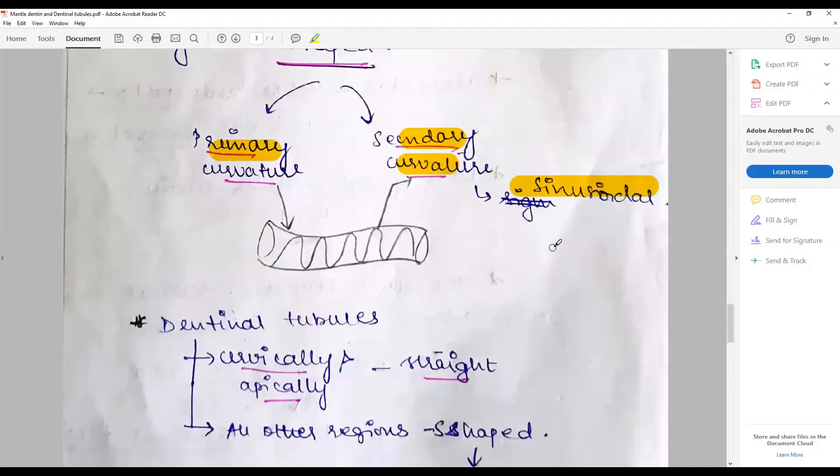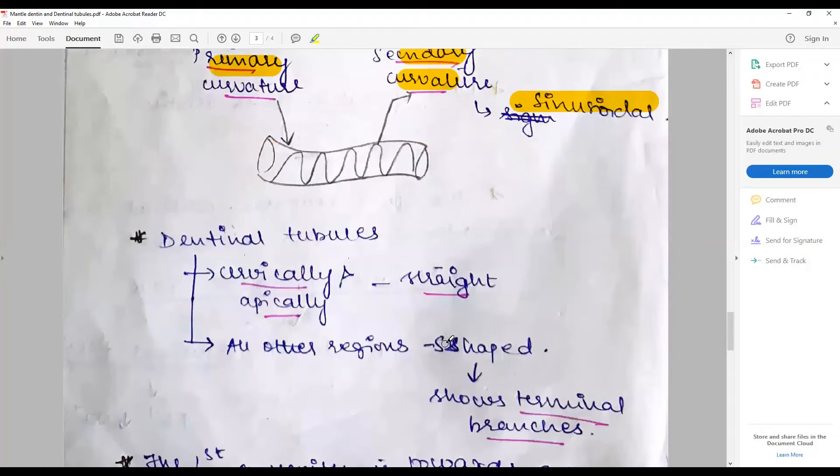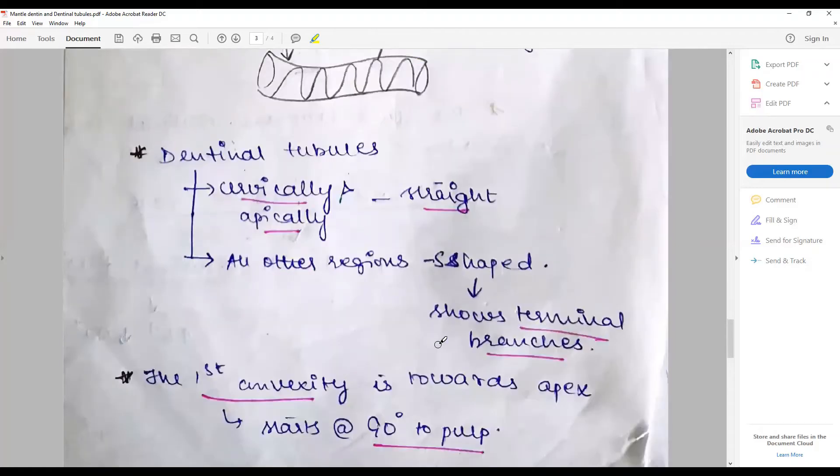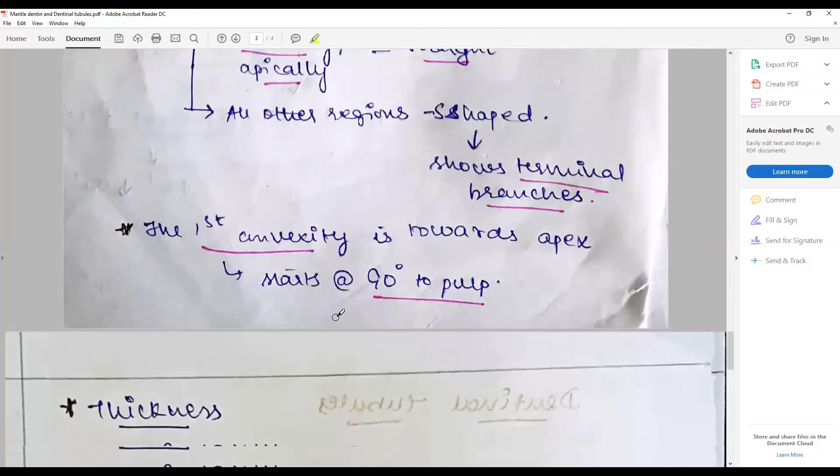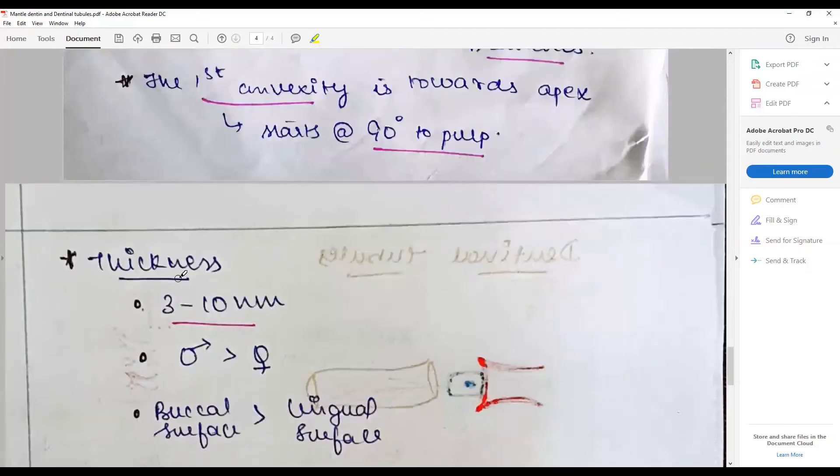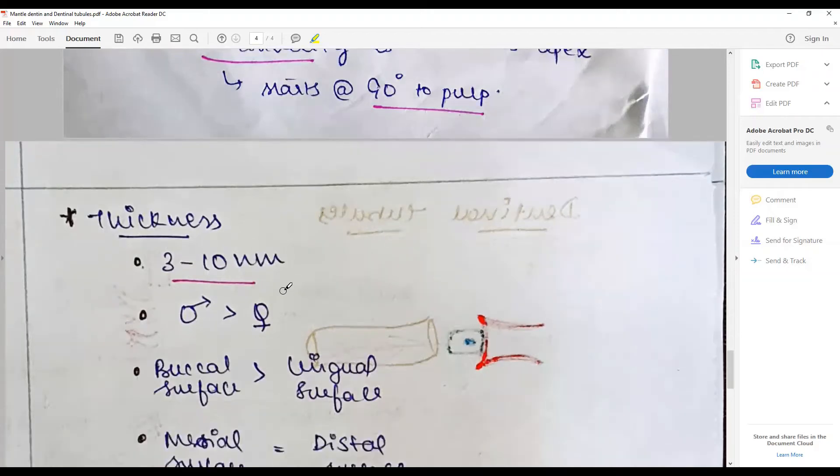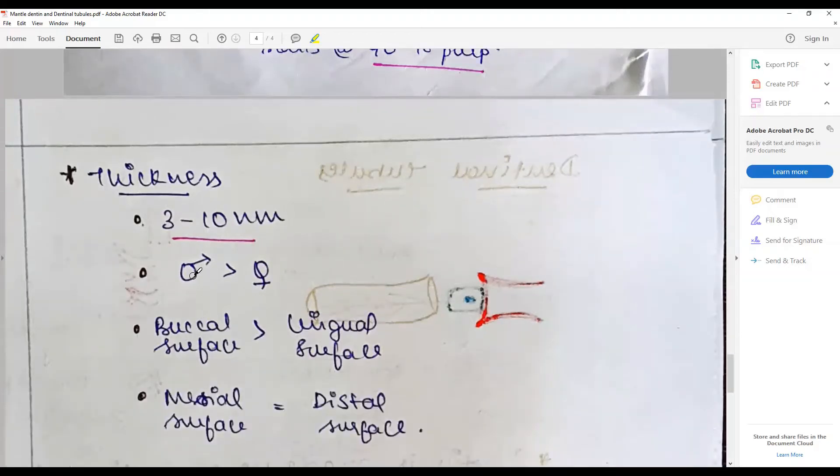Secondary curvature is described to be sinusoidal. They are cervically and apically straight; other regions they are S-shaped showing terminal branches. The first convexity is facing towards the apex and starts at 90 degrees to pulp. The thickness varies between 3 to 10 micrometers.